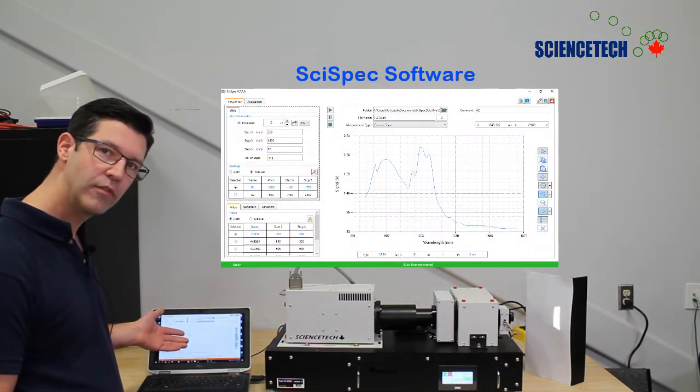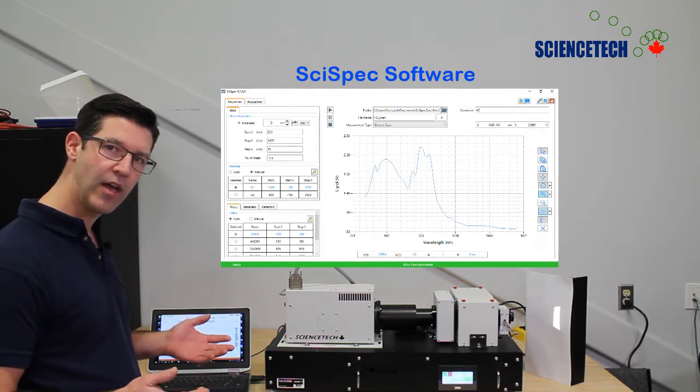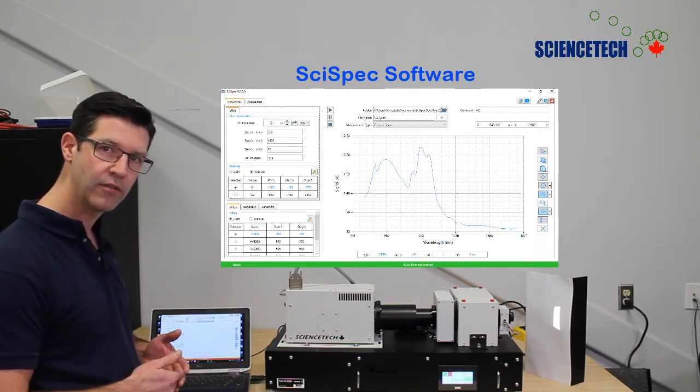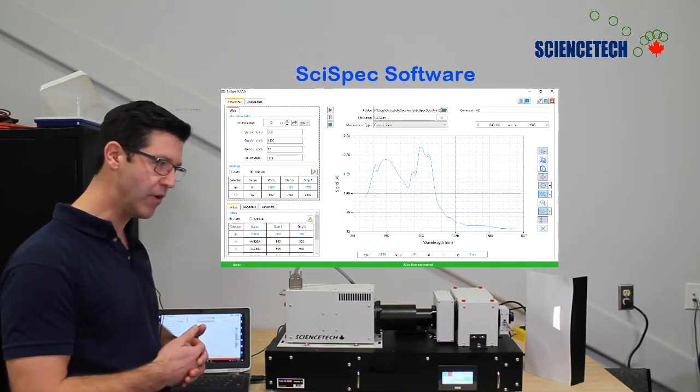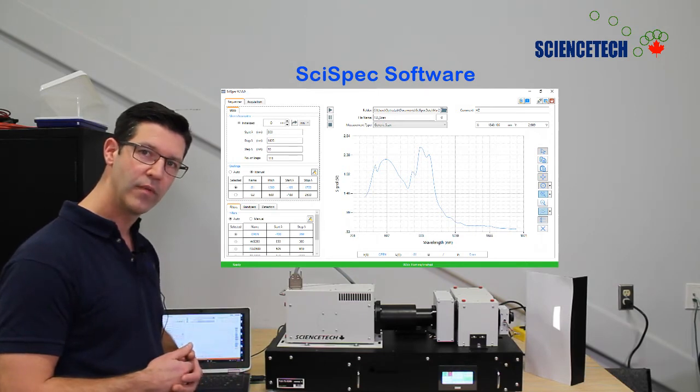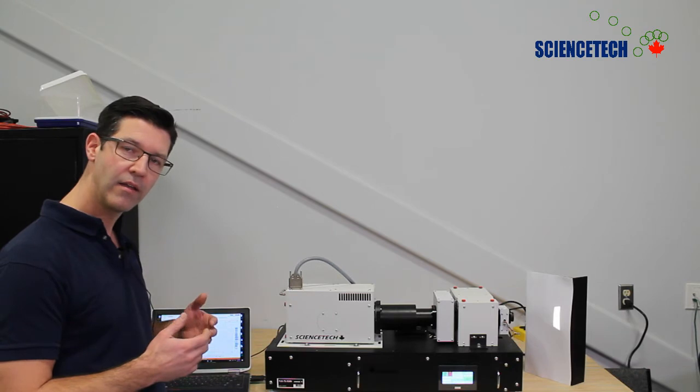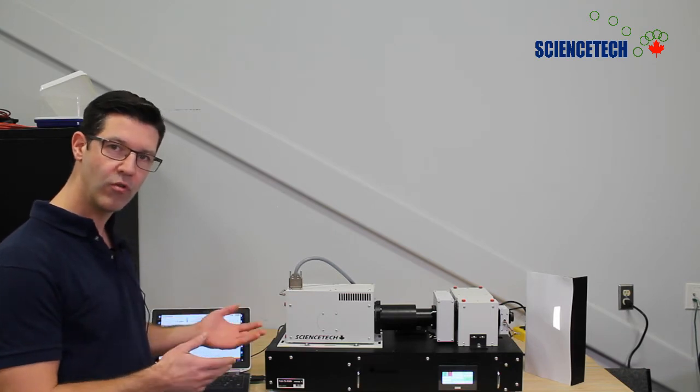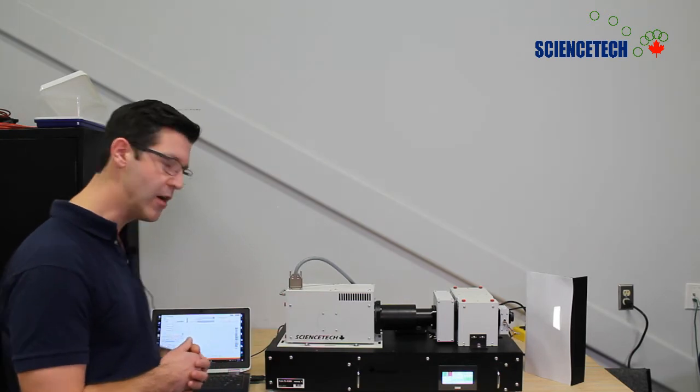The software that we use is called SciSpec. It's completely made at Science Tech by our own software engineers. Using this software we can control different operations of the light source as well as the monochromator and the filter wheel. We can also integrate further controls through a remote access system. We also have LabVIEW drivers that are available for this kind of system as well.